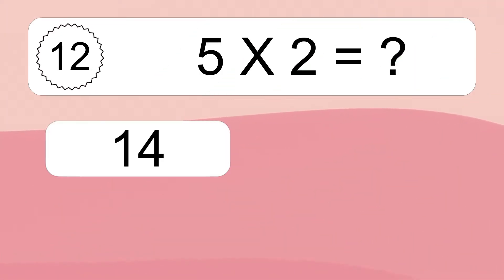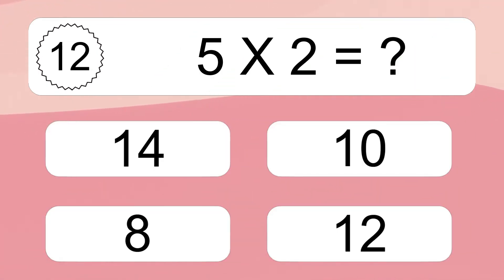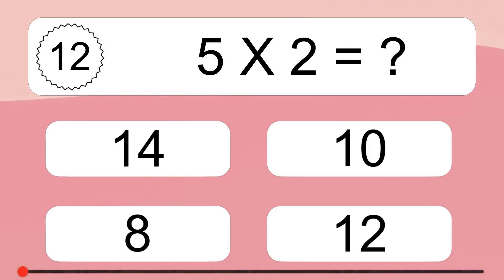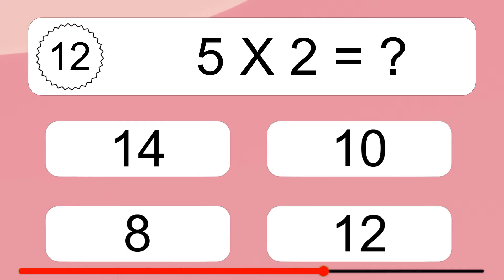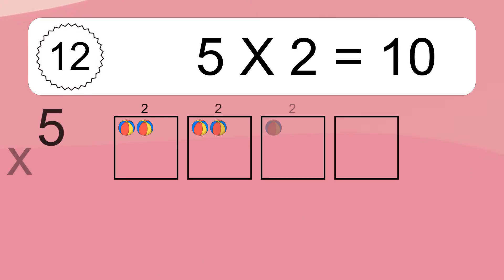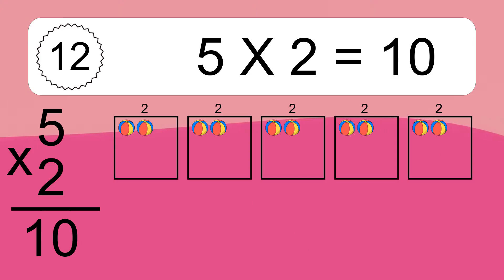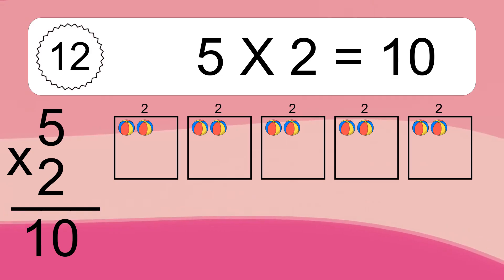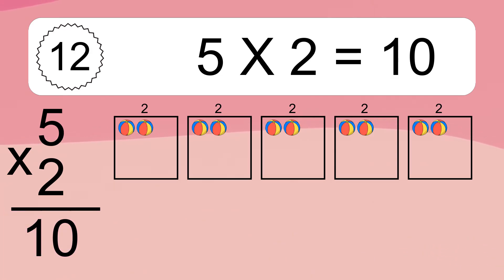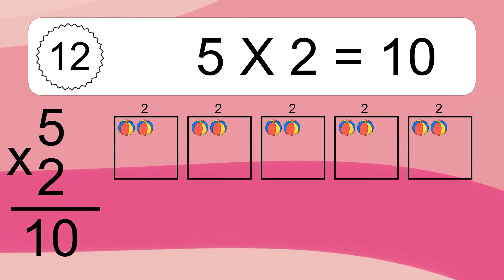5 times 2 equals what? 5 times 2 equals 10. We have 5 boxes, and each box has 2 colorful balls inside. If you count all the balls in all the boxes together, you will have 5 times 2 balls. This equals 10 balls.